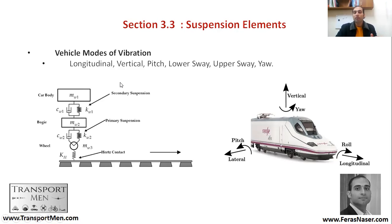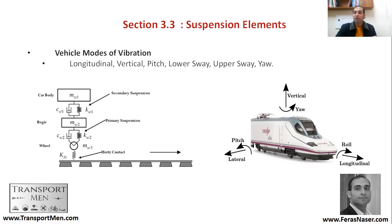Vehicle modes of vibration include longitudinal, lateral, and vertical translational movements, as well as rotational movements: pitch (lateral rotation), yaw (vertical rotation), and roll (longitudinal rotation). These movements and directions of stress control the behavior of the vehicle and you should be familiar with all of them.